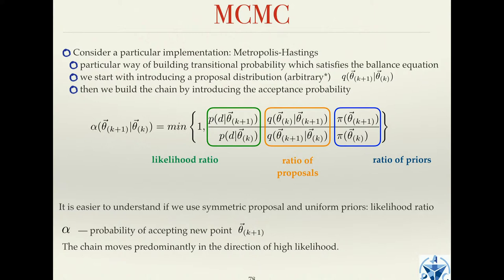We build the chain by introducing an acceptance probability alpha — the acceptance probability going from theta_k to theta_{k+1}. It is the minimum between one and the Metropolis-Hastings ratio, which contains three parts: a ratio of priors (one if uniform), a ratio of proposals (one if symmetric), and a ratio of likelihoods — the most important term. If the next point has higher likelihood, this ratio is above one and you always accept. If less than one, you compute alpha and accept with probability alpha.